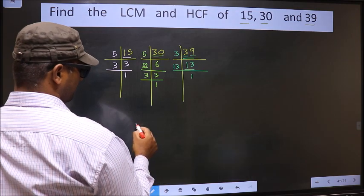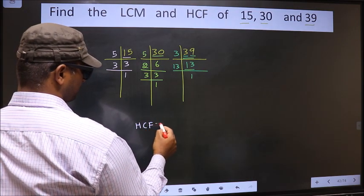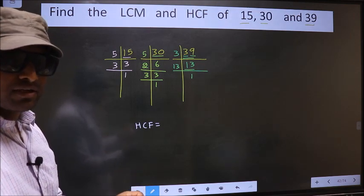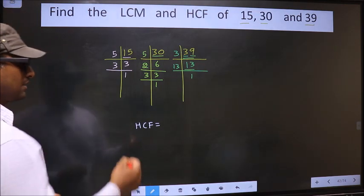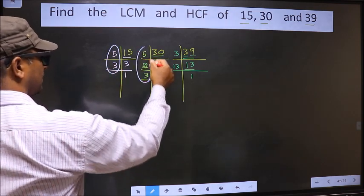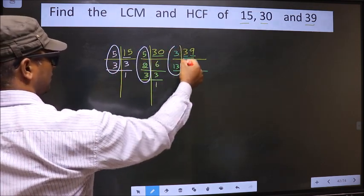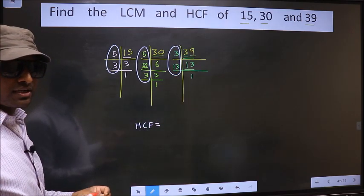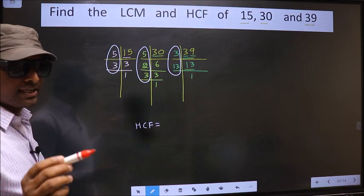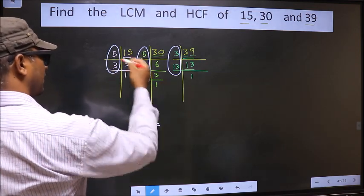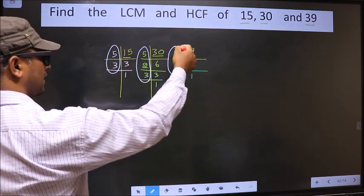So now our HCF is: HCF is the product of numbers which should be present over here and here and also here. I repeat, HCF is the product of numbers which should be present in these 3 places.